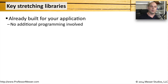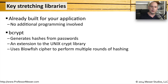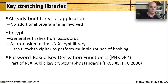If you are an application developer, you might want to use key strengthening or key stretching algorithms, and there's no reason to rebuild it from scratch. There are many libraries available. One very popular library is bcrypt, which creates hashes from passwords. You'll find it in the Unix Crypt library, and it uses the Blowfish cipher to perform multiple rounds of hashing. Another pre-built library is the Password-Based Key Derivation Function 2, or PBKDF2, which is part of RSA's key standards, written up in PKCS number 5 and also part of RFC 2898.